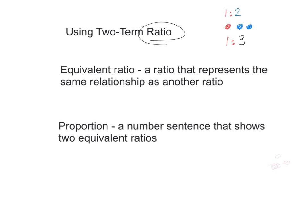The next thing we want to mention is what an equivalent ratio is — two ratios that are equal, they're the same. So if the ratio has the same relationship as another ratio, we call it equivalent. For example, this relationship of one red to two blue is actually equal to the relationship of two red to four blue. Because in each of these cases, you can see one red just has two blue with it. So that's what we call an equivalent ratio.